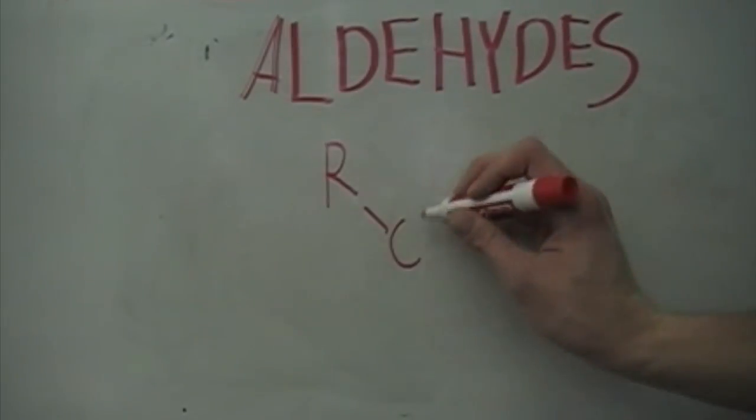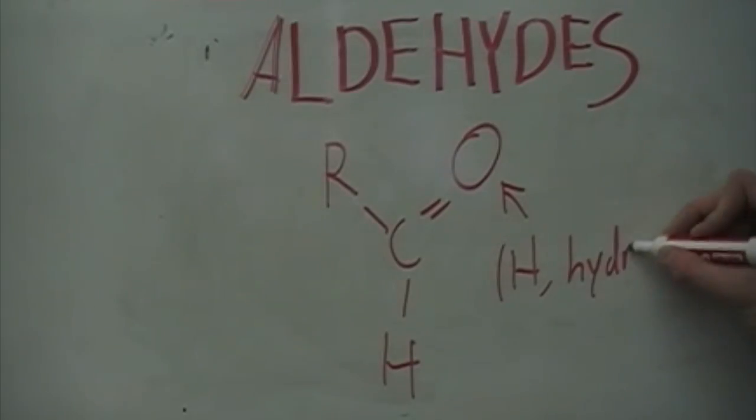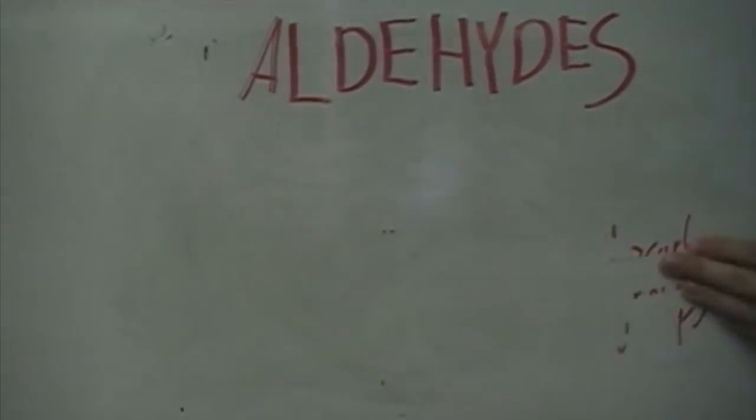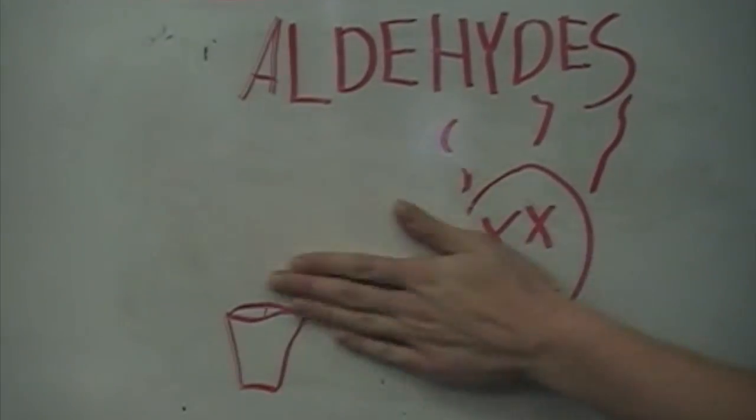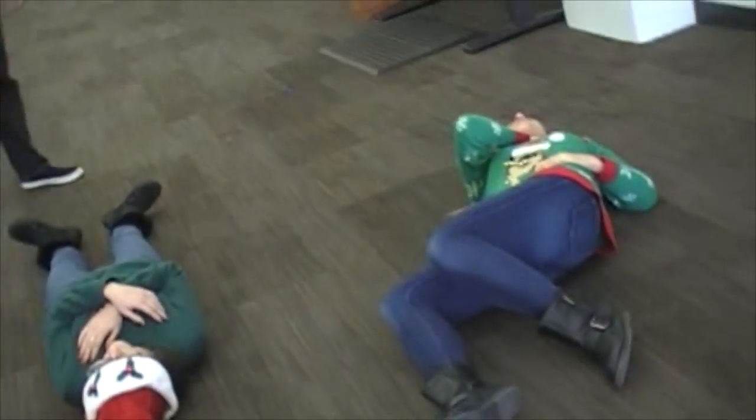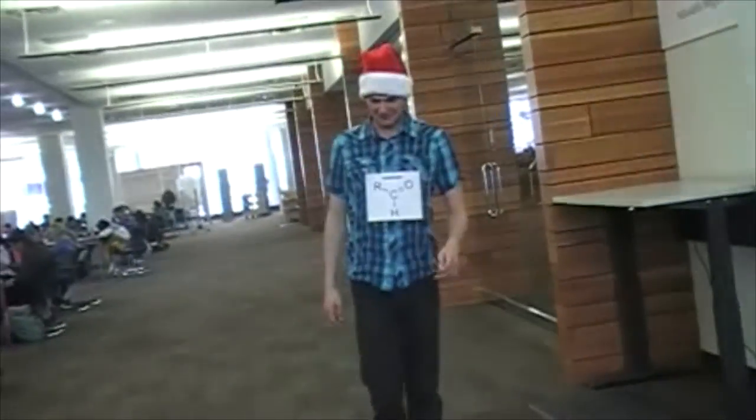Aldehydes are composed of a carbonyl group bonded to a hydrogen atom and either a second hydrogen atom or a hydrocarbon group. Aldehydes are commonly found in the oils that give plants their distinctive smells and in the preservatives that keep cadavers fresh.